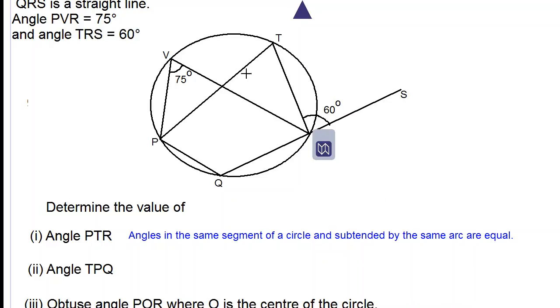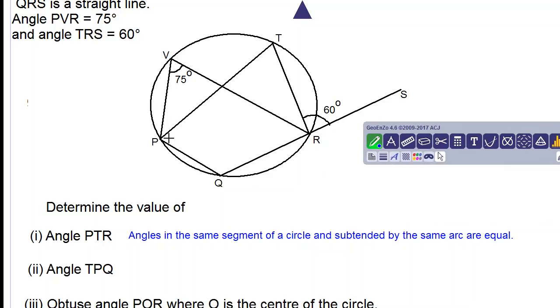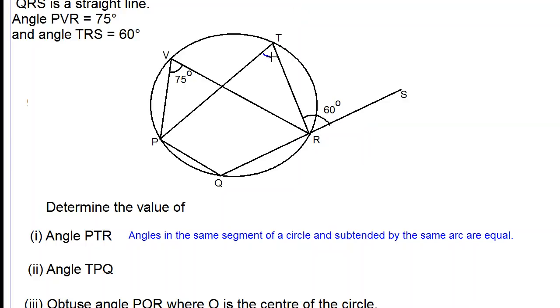That means that this angle is equal to this angle, so angle PVR and angle PTR are the same. This would be 75 degrees and both of these angles are equal. So the answer is 75 degrees.